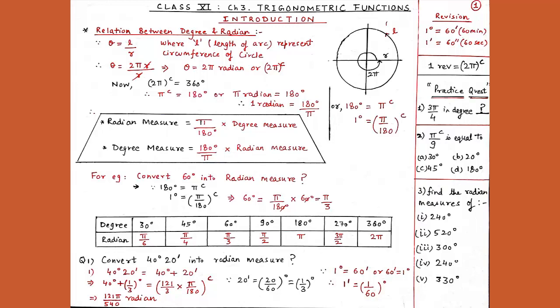Our next question: convert 40 degrees 20 minutes into radian measure. In this type of question, we first convert the entire quantity into degrees. Here 40 is already in degrees and 20 is in minutes. So the first step is to convert 20 minutes into degrees. We write 40 degrees 20 minutes as 40 degrees plus 20 minutes.